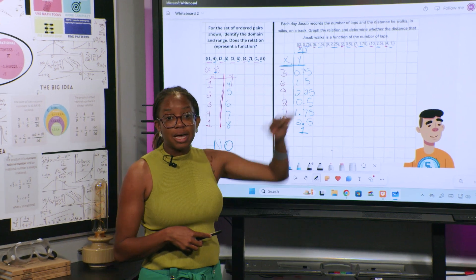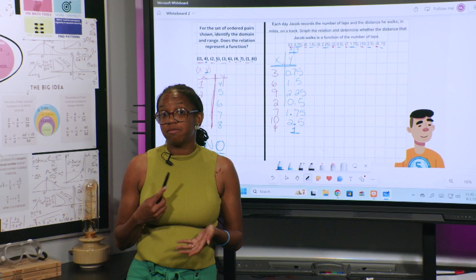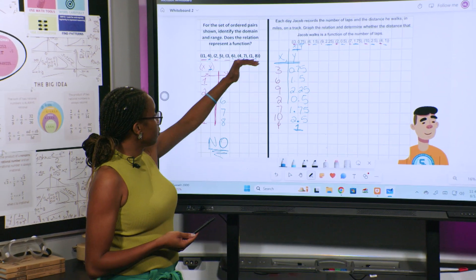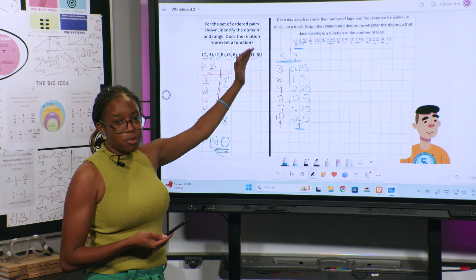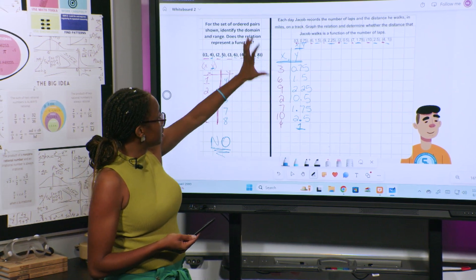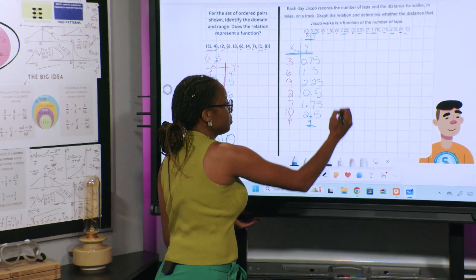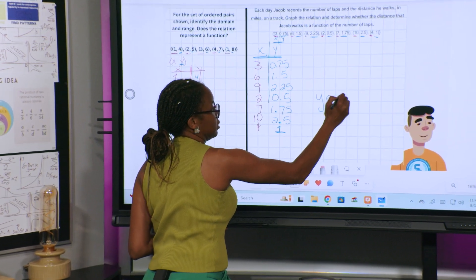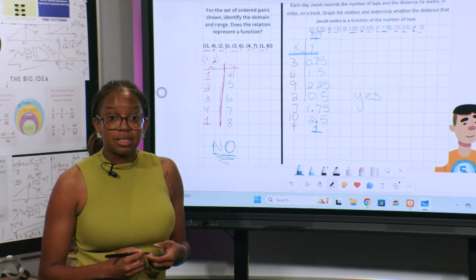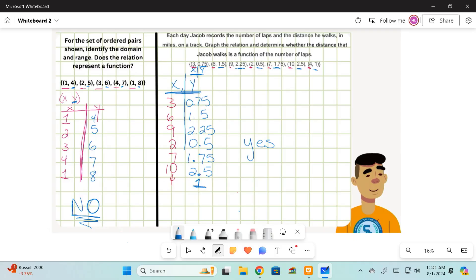But I can also look at these x and y values to see if it's a function as well. And so for this, I have nothing that repeats, nothing for my x's and nothing for my y's. Guys, that's one way that I can know that this, yes, it is a function. And that was simple and easy.